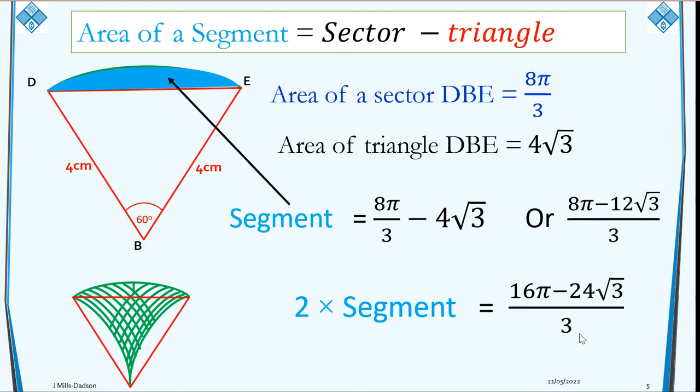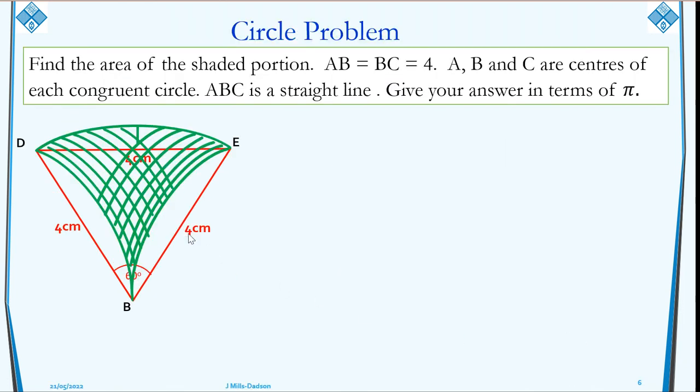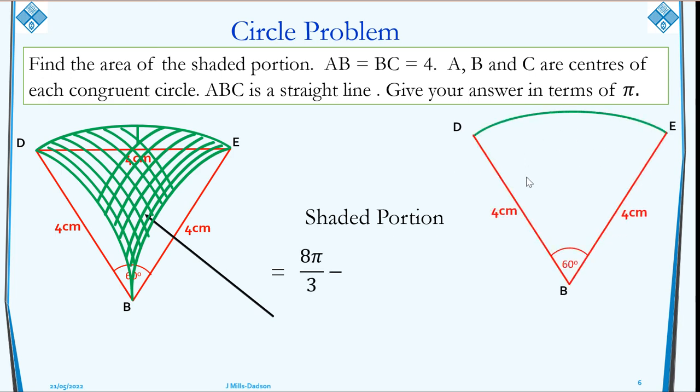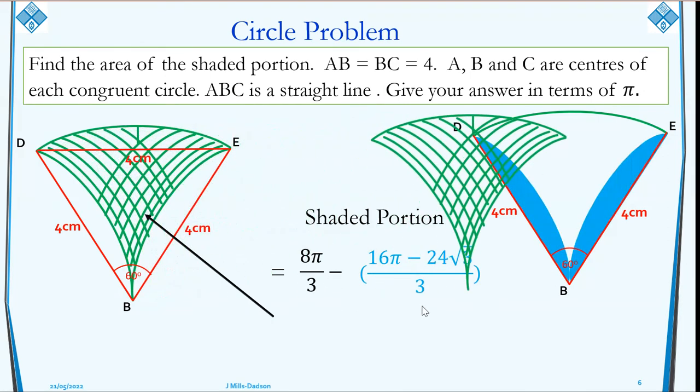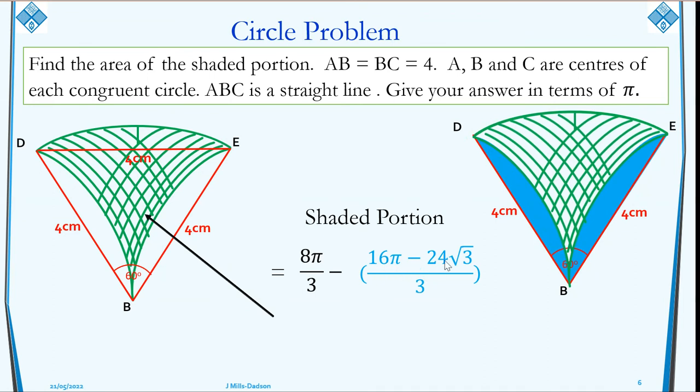So to finally get our answer, we know that the shaded portion now equals a full sector, which is 8π/3, minus 2 segments, which we had as (16π - 24√3)/3. And when you work this out, you end up having (24√3 - 8π)/3.